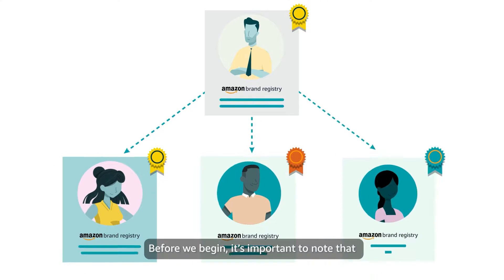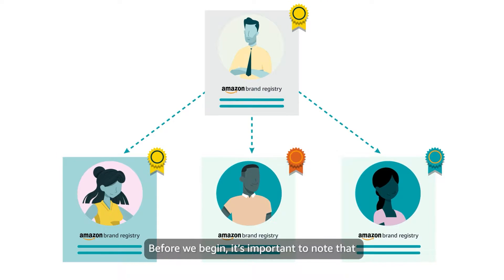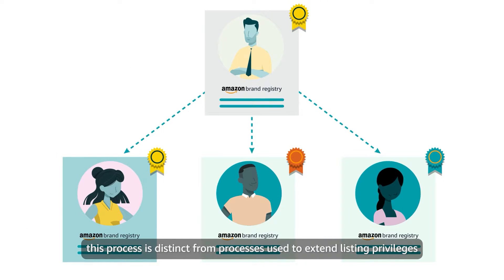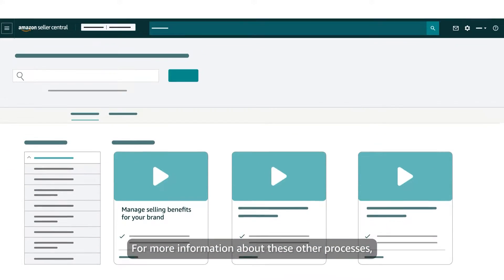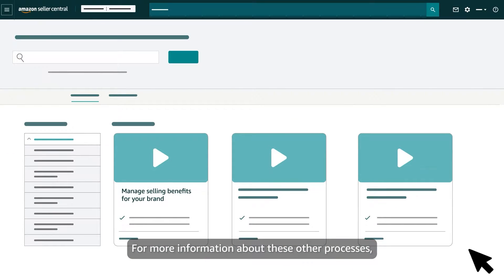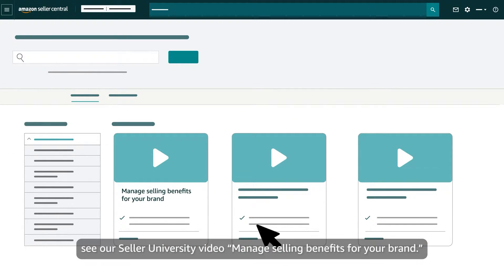Before we begin, it's important to note that this process is distinct from processes used to extend listing privileges and selling benefit eligibility to additional Seller Central accounts. For more information about these other processes, see our Seller University video, Manage Selling Benefits for Your Brand.